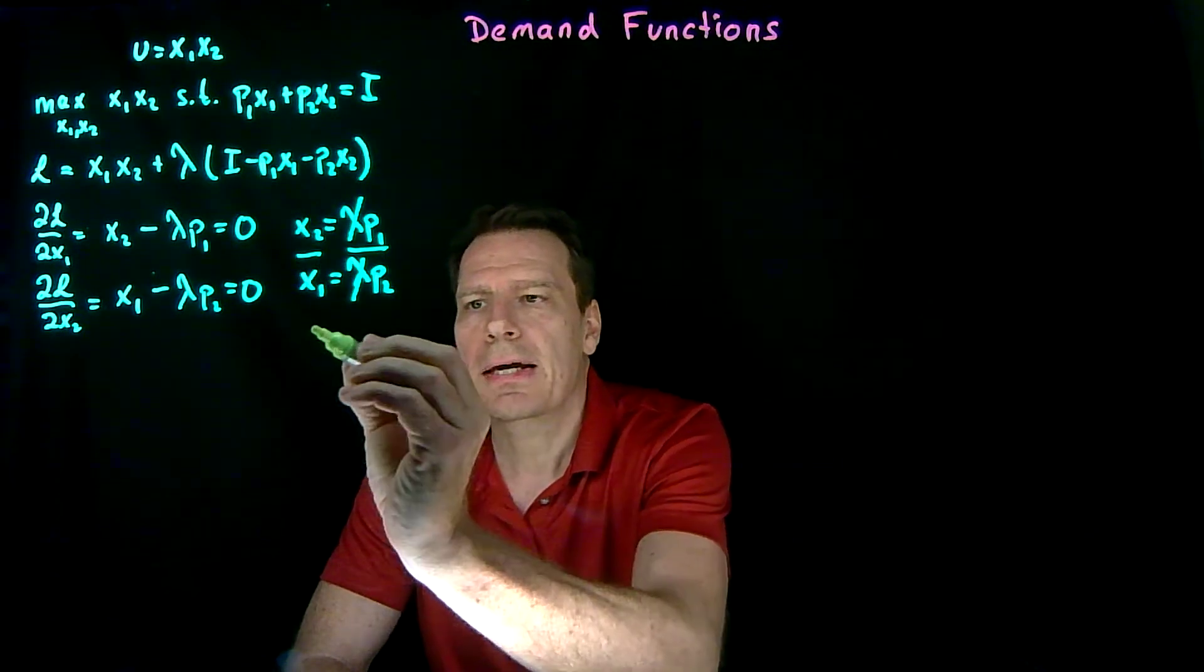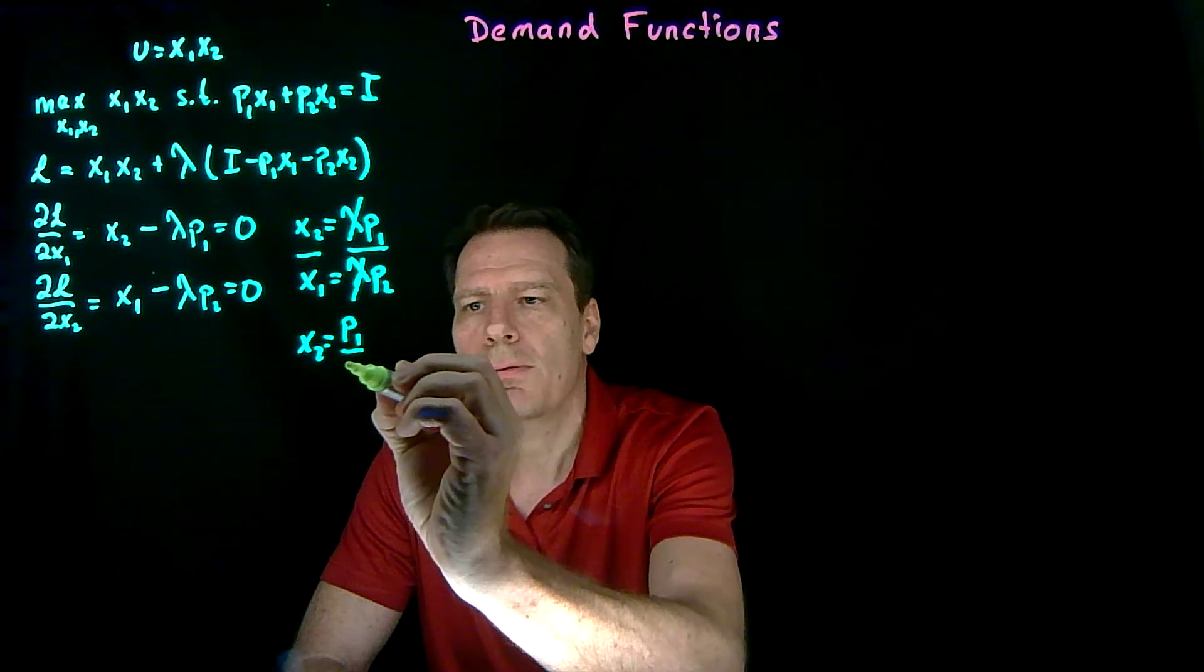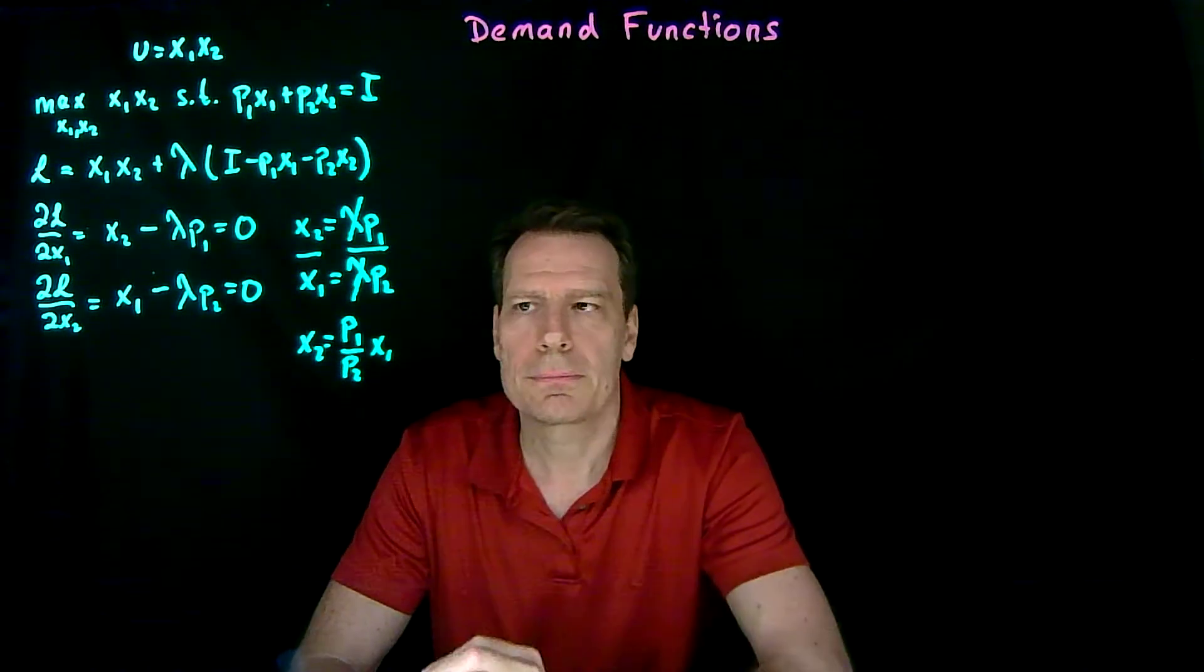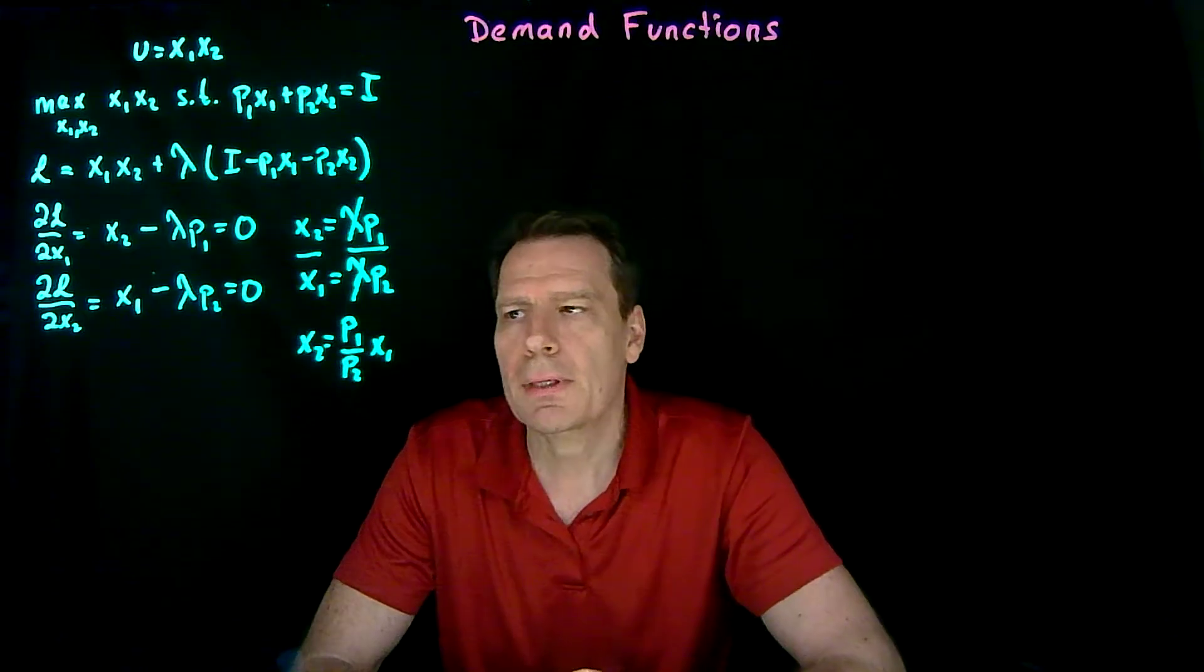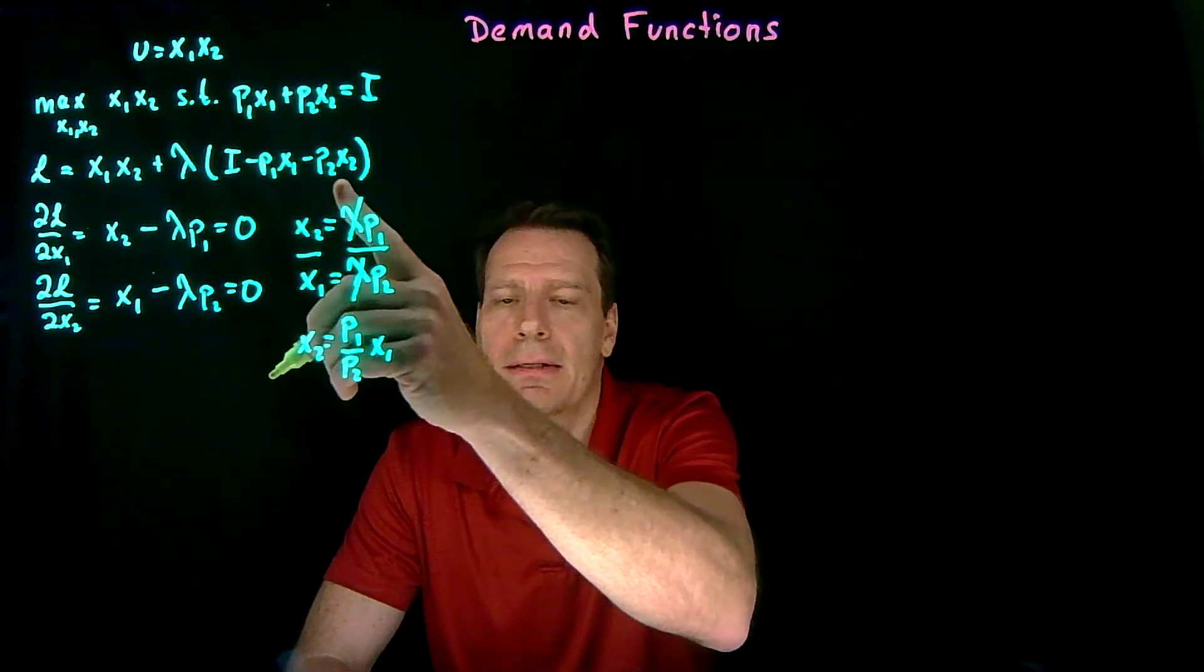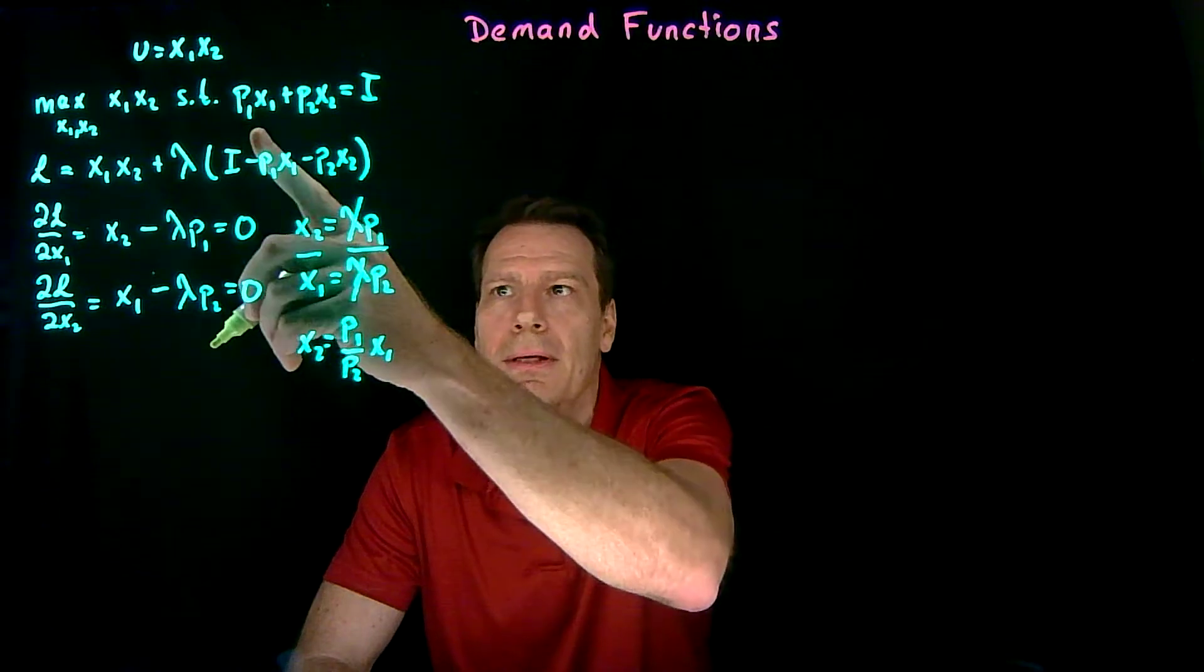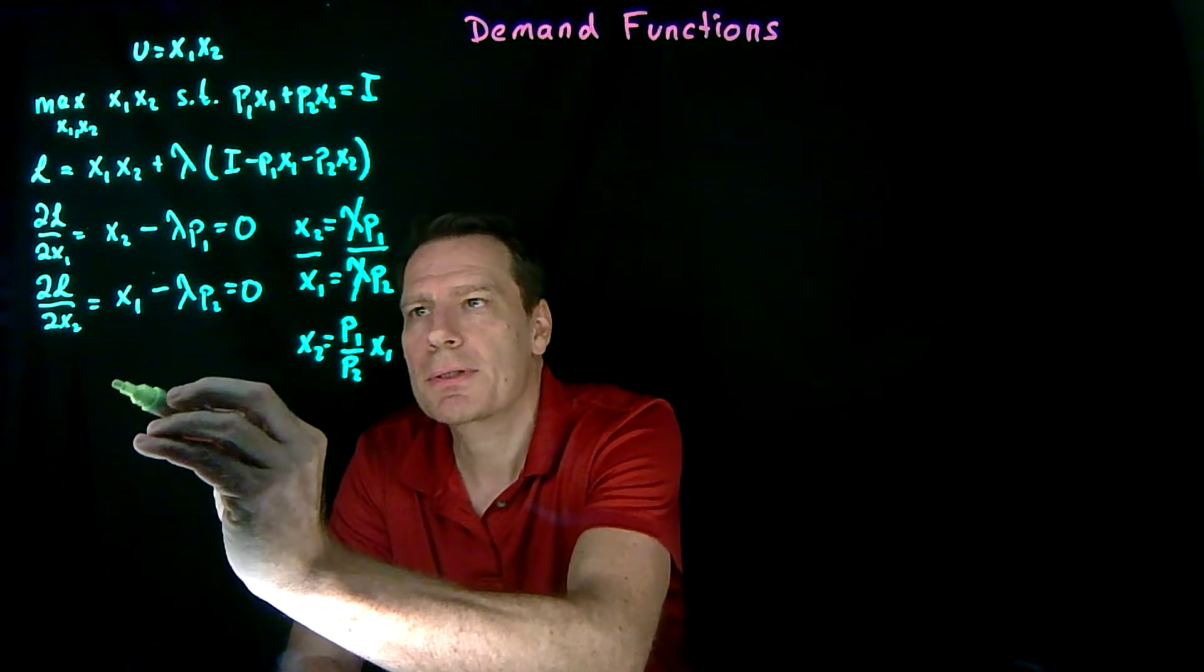Then we can solve for x2, and we get x2 is equal to just a function of the prices, p1 over p2, and x1. Finally, we take the partial of the Lagrangian with respect to lambda, and that gives us back this. We set that to 0, which is just our budget equation.